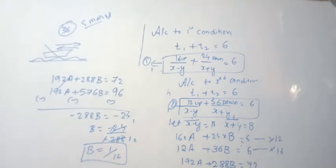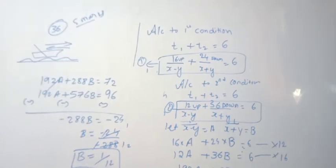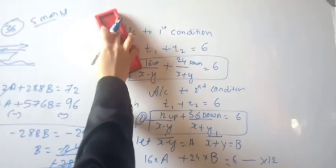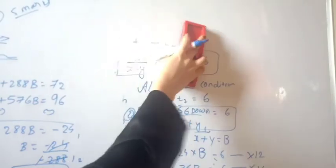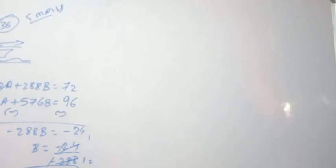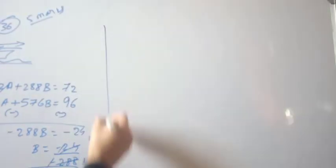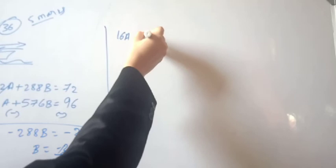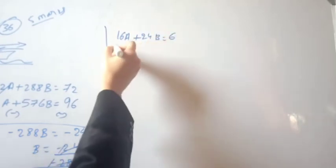Now, using the value of b, we find the value of a. Substituting b equals 1/12 back into equation 3: 16a plus 24b equals 6.